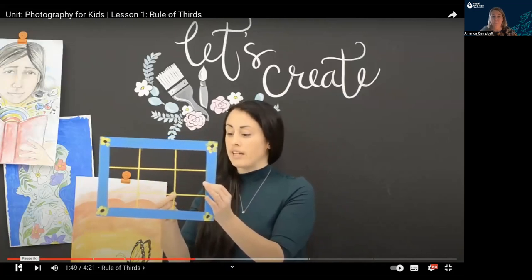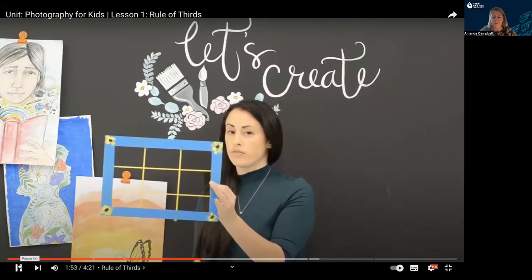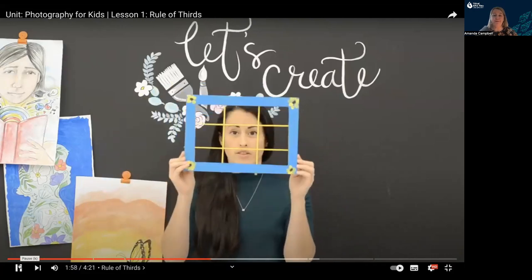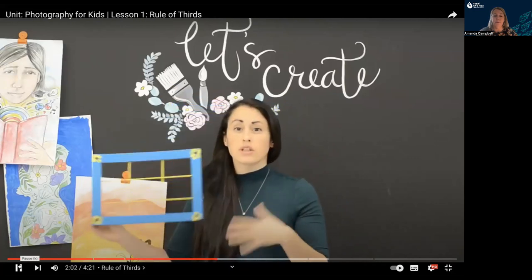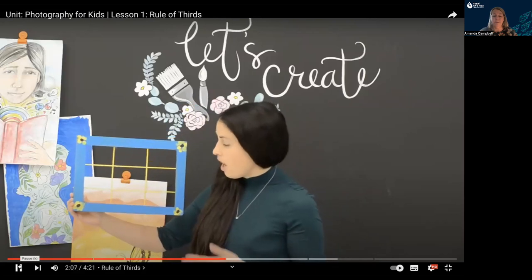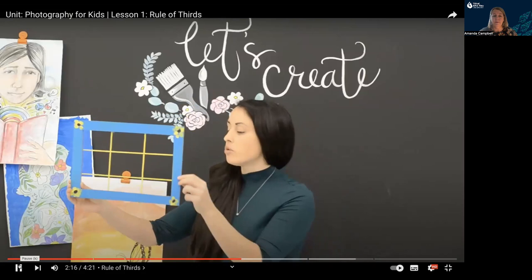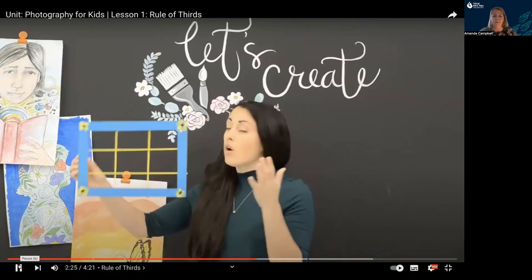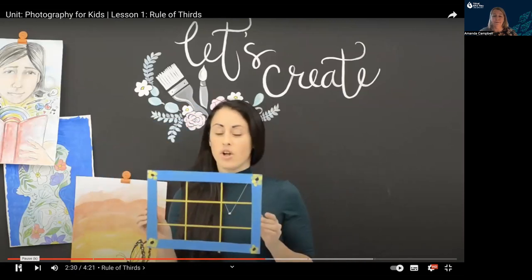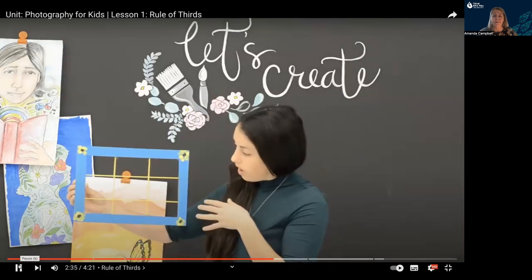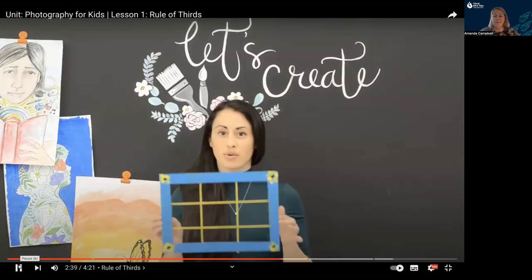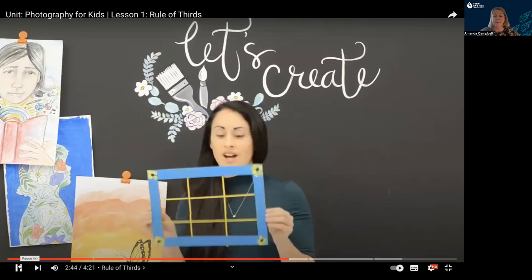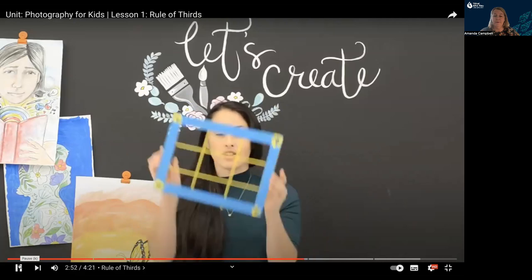Instead, place your subject on one of the four intersecting points. If you're taking a portrait, don't put their face right in the middle — move it off to the side to show more of the background. For a landscape, place your horizon line on one of the horizontal lines going across the top or bottom. For our first project, you'll make your own viewfinder with vertical and horizontal lines, take it outside, and practice framing shots before using a real camera.